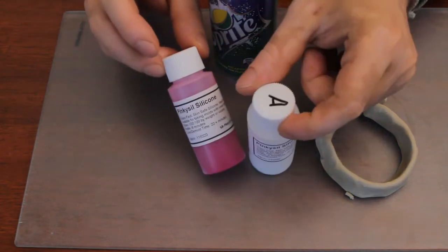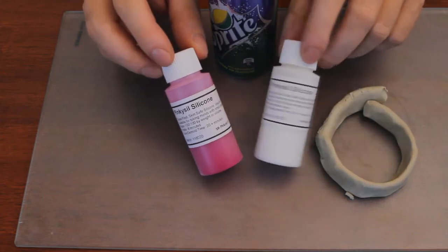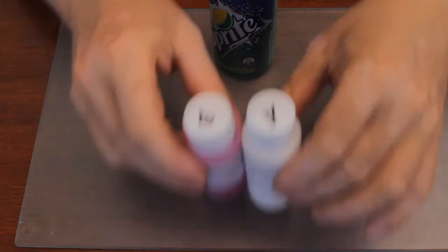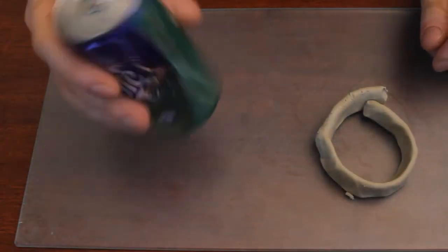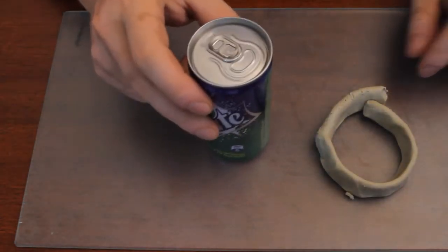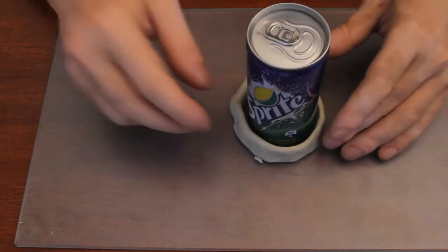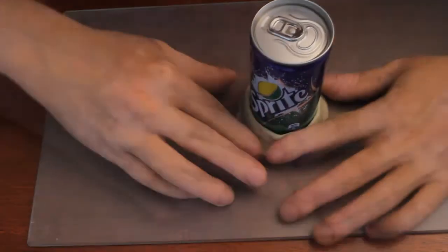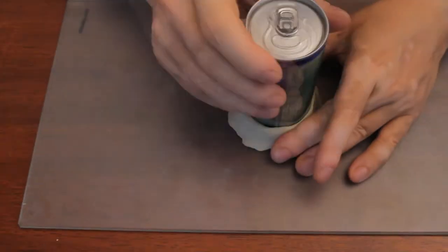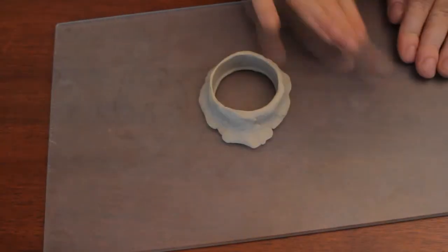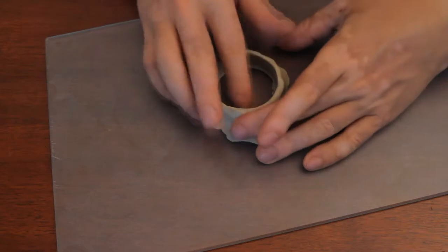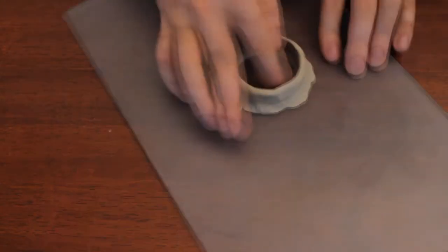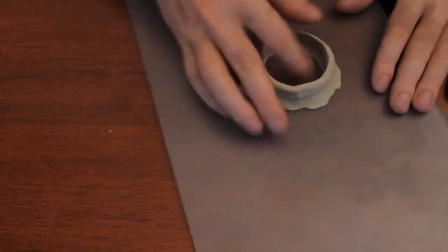You mix it 50-50 A and B. Pretty good, it cures really quick. Half an hour and it's done. Now I'm gonna make it really quick. Quite important is to fill the gaps because the silicone might escape underneath.